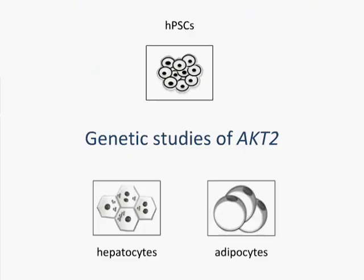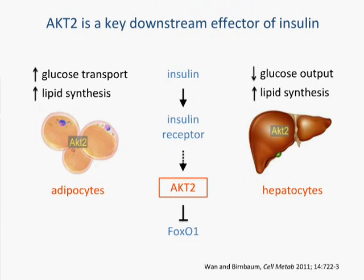I wanted to tell you a second story about a different gene that we studied, which was AKT2. We studied it in two very interesting cell types — hepatocytes and adipocytes — because AKT2 is one of the key signaling mediators of insulin. AKT2 lies directly downstream of the insulin receptor and is thought to inhibit FOXO1 in the nucleus, drawing it out into the cytosol to inhibit its nuclear function.